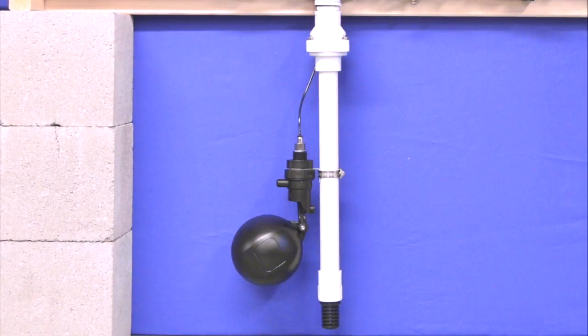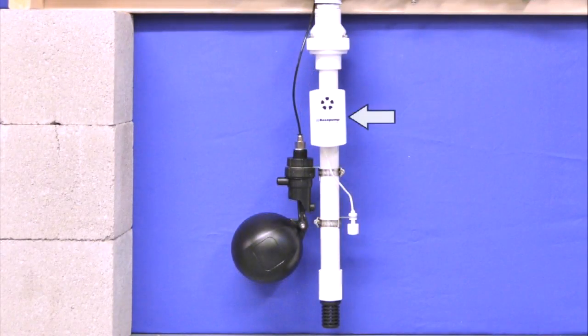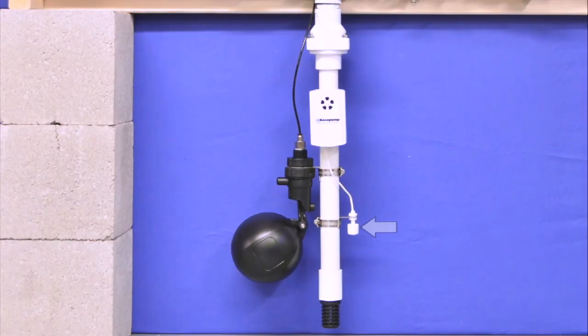Determine the position of the float unit and clamp it to the side of the suction pipe. Position and mount the high water alarm to the suction pipe or wall using the included hardware. Clamp the float to the suction pipe at your desired level.